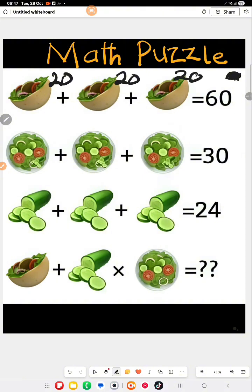Line 2 is 30, which is 10 plus 10 plus 10. And line 3, which is cucumber, is giving us 24, which means each cucumber is 8. 8 plus 8 plus 8 equals 24.